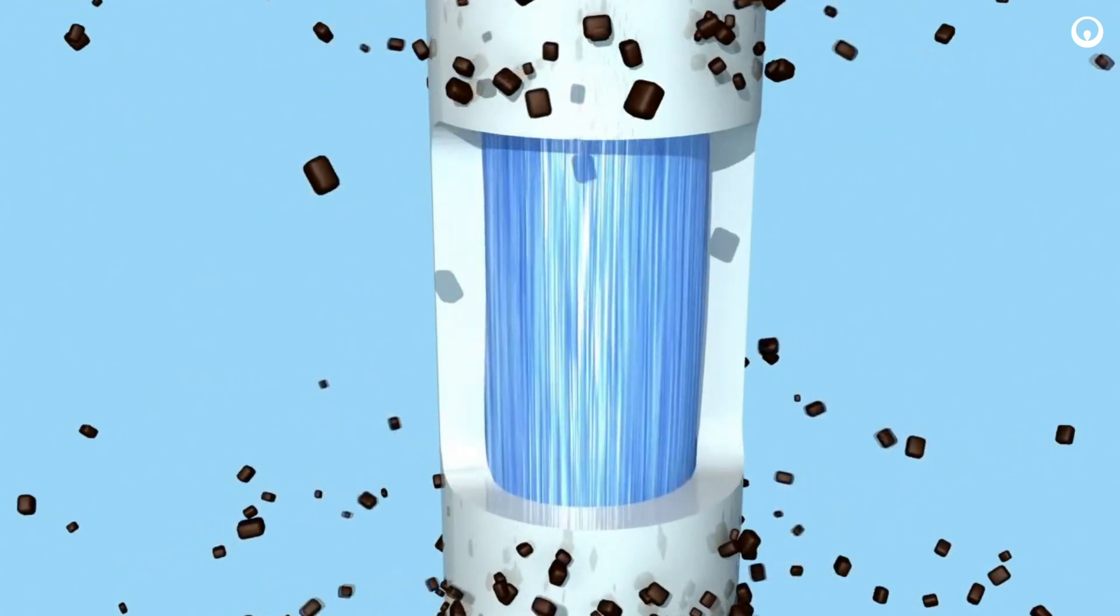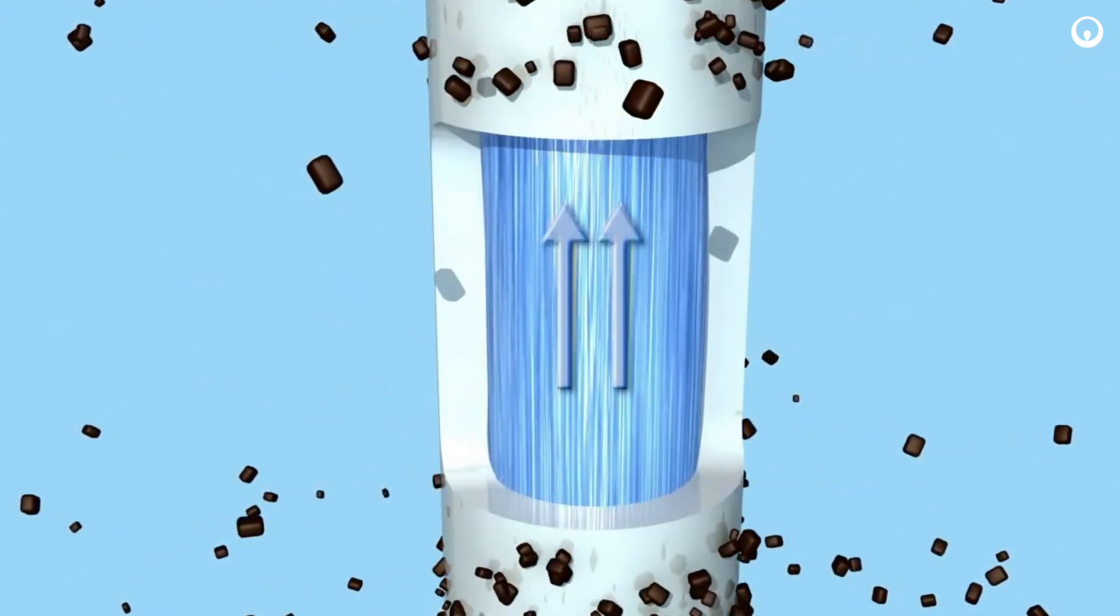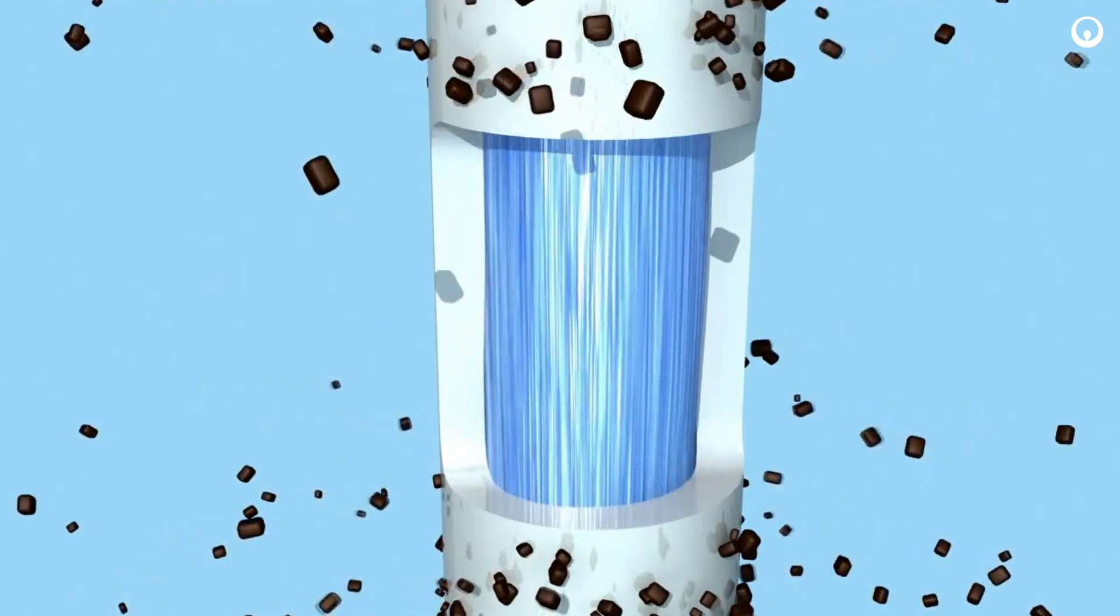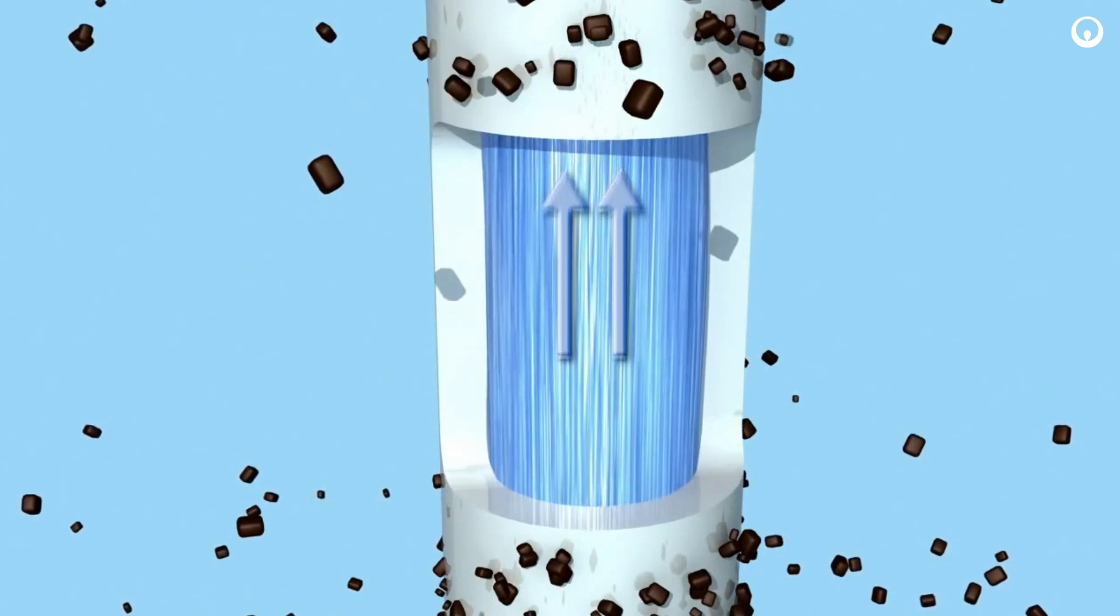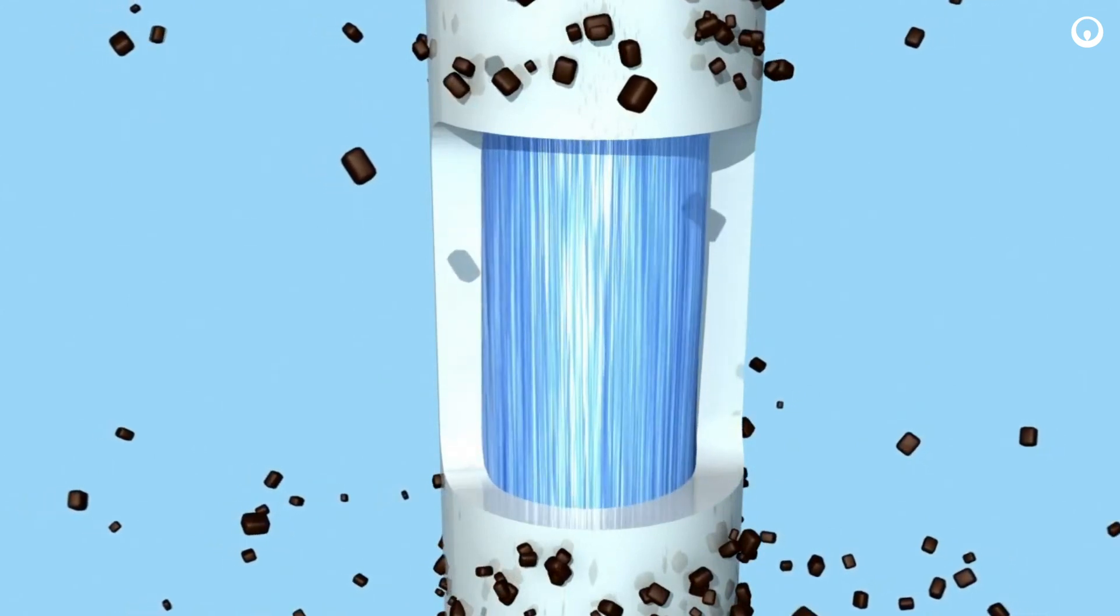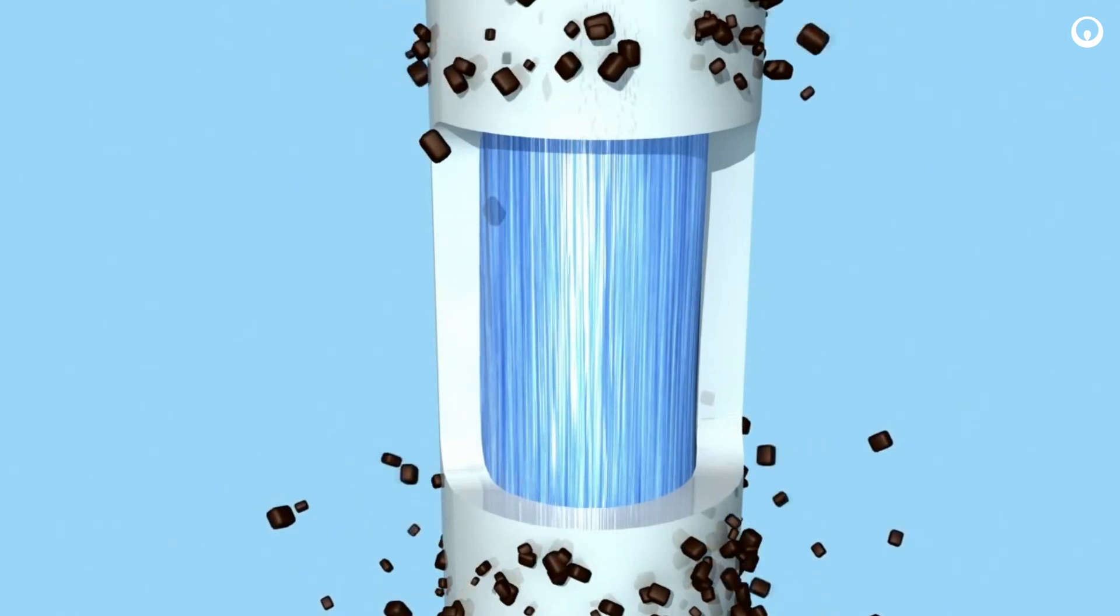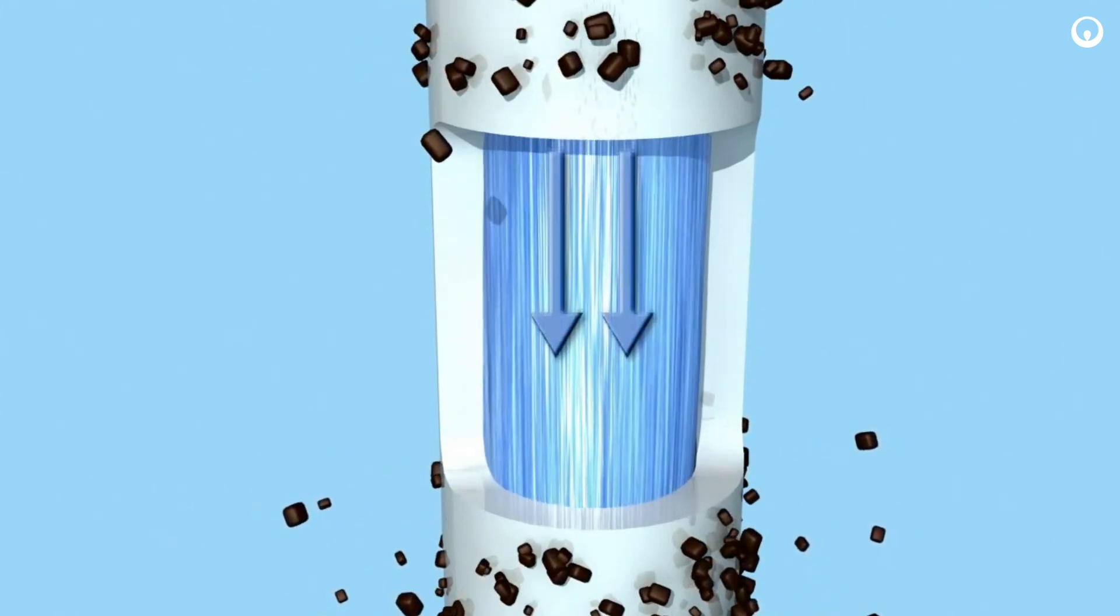This results in a consistent production of a high quality effluent. As water flows through the microscopic pores and into the membrane fibers, the solids, bacteria and viruses are blocked, letting only the treated water pass through to the pipes. Treated water then can be sent through the distribution system.